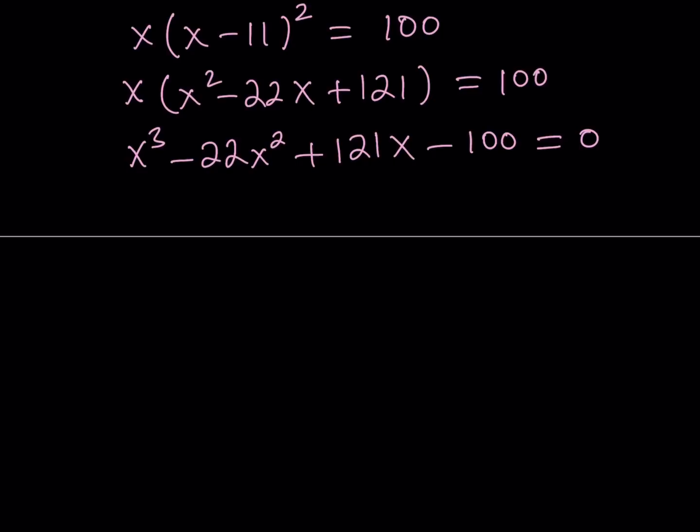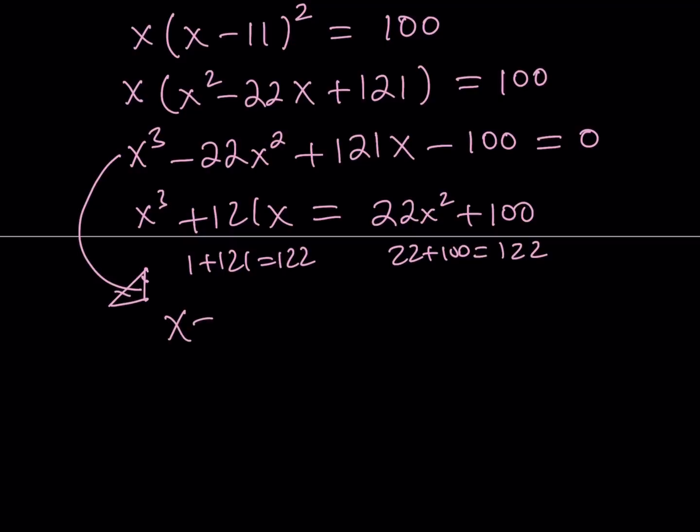But here's what I would like you to notice. Instead of writing it that way, why don't we put some of the terms on the right-hand side. Now here's what I'd like you to notice. If you add the coefficients on the left-hand side, you're going to get 1 plus 121, which is 122. And if you add them on the right-hand side, you get 22 plus 100, which is also 122. The sums are equal, which means when you bring them to the same side, there are going to be a difference, and that's going to be 0. In other words, the sum of the coefficients of this polynomial is 0, which means x equals 1 is a solution.